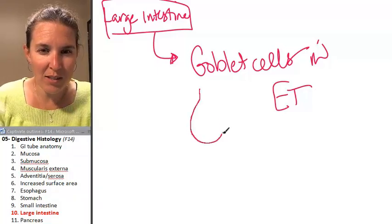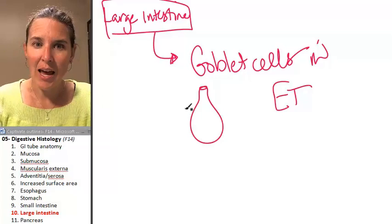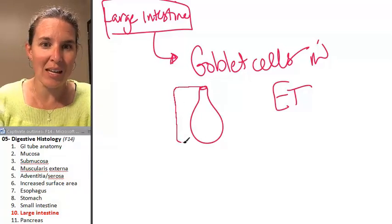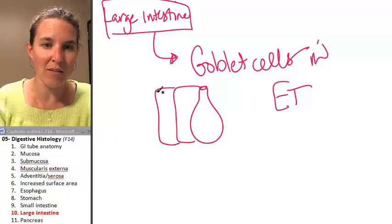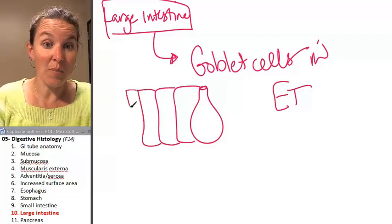Remember those goblet cells? They look a little something like this. And what did they do? They're embedded in with all the rest of the simple columnar epithelium.